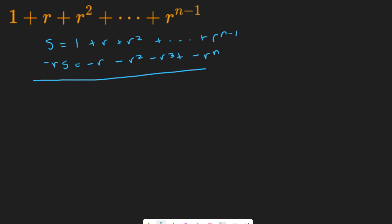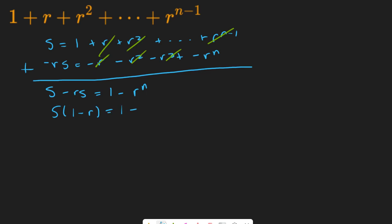We add both sides together and we get S minus rS equals — notice that you have cancellation of every single term in the interior, including the last term. So on the right-hand side you're going to have 1 minus r to the n. Notice that you can factor out the S, which tells you that S times (1 minus r) equals 1 minus r to the n. So S equals (1 minus r to the n) divided by (1 minus r).